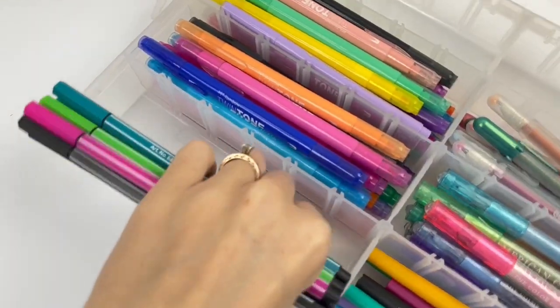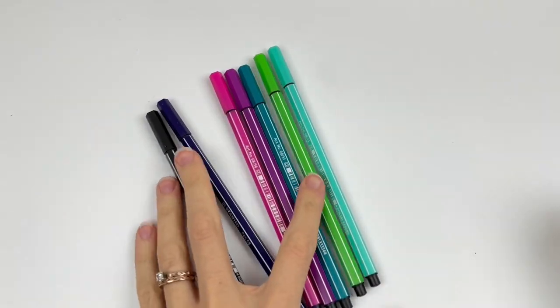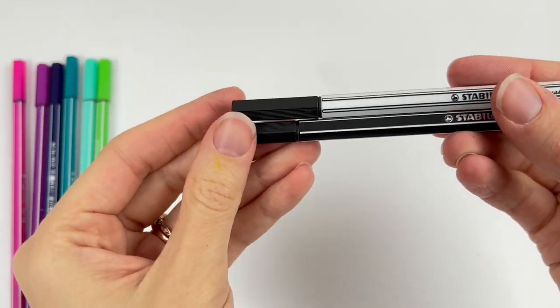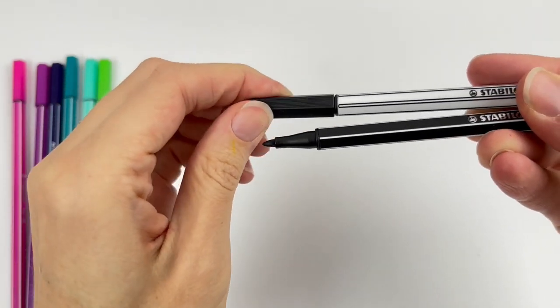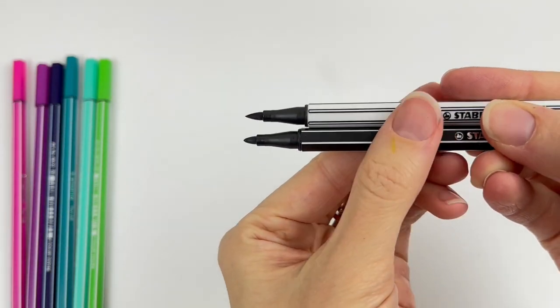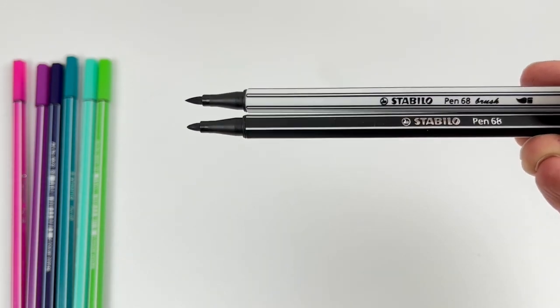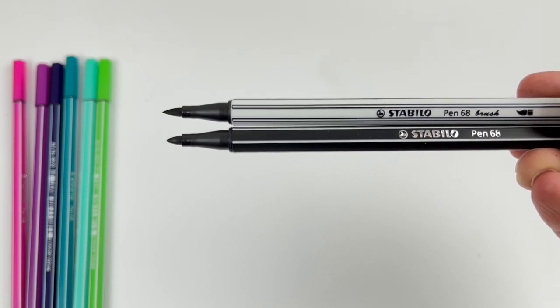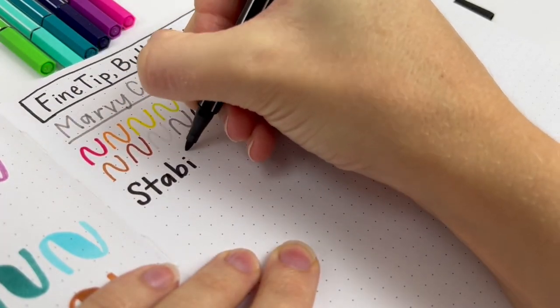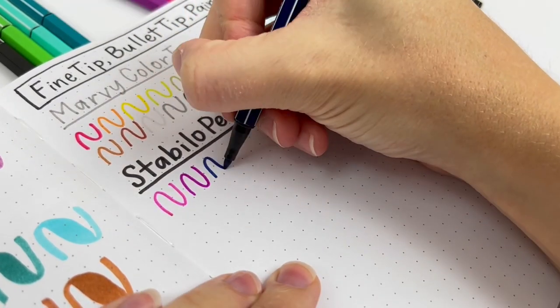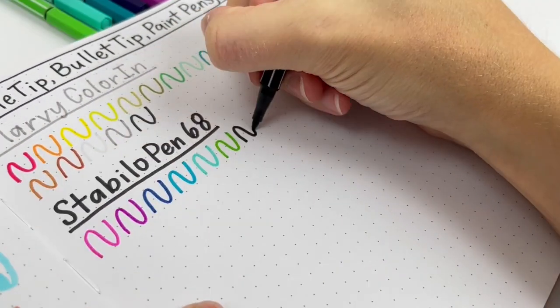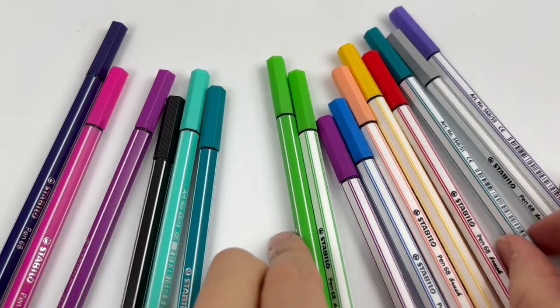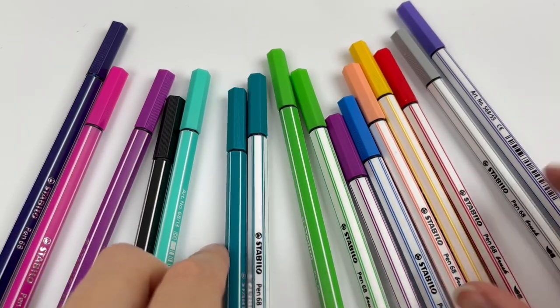Now let's look at the Stabilo Pen 68 bullet tip pens. Stabilo has the fine tip pens, you know, the ones that are orange, like the orange pen body, and those ones I feel like are really popular, but these ones are thicker with that bullet tip, and they match the brush pens. Although some colors are the same, but I feel like there are more colors in the bullet tip, or maybe I just don't have all the brush pen colors. I'm not sure, but I don't use these, so I'm going to send them on with the brush pen colors that I'm also decluttering.